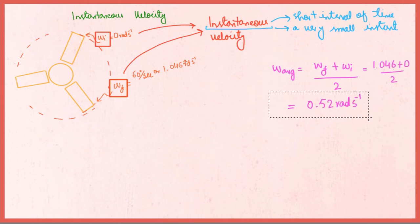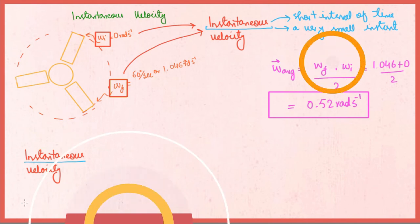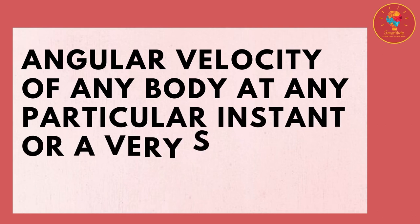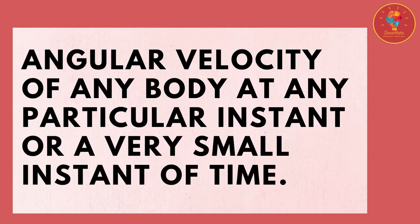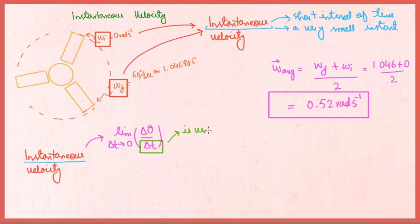Average angular velocity can also be defined in terms of instantaneous angular velocity. Instantaneous angular velocity is the angular velocity of any body at any particular instant or a very small interval of time. Mathematically, it is equal to the limit of the ratio delta theta over delta t as delta t approaches 0, which means the time interval is very small — almost equal to 0, but not exactly equal to 0. This is the concept of limit.